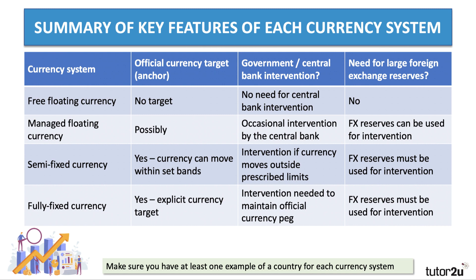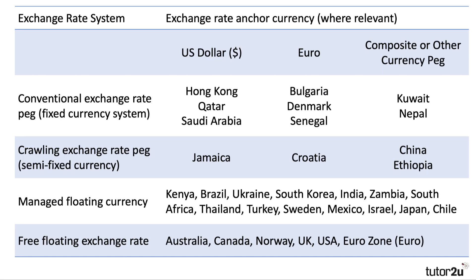Make sure you have at least one example of a country for each currency system. Countries with fixed exchange rates include Hong Kong, Qatar, and Saudi Arabia — fixed to the dollar — and Bulgaria, Denmark, and Senegal — fixed to the euro. Kuwait and Nepal have a fix against a composite of currencies. Jamaica, Croatia, China, and Ethiopia essentially have a semi-fixed exchange rate system, controlling by how much the currency can move day-to-day.